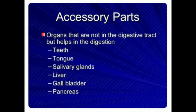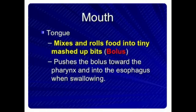Accessory parts are organs that are not in the digestive tract but help in digestion. These include teeth, tongue, salivary glands, liver, gallbladder, and pancreas.